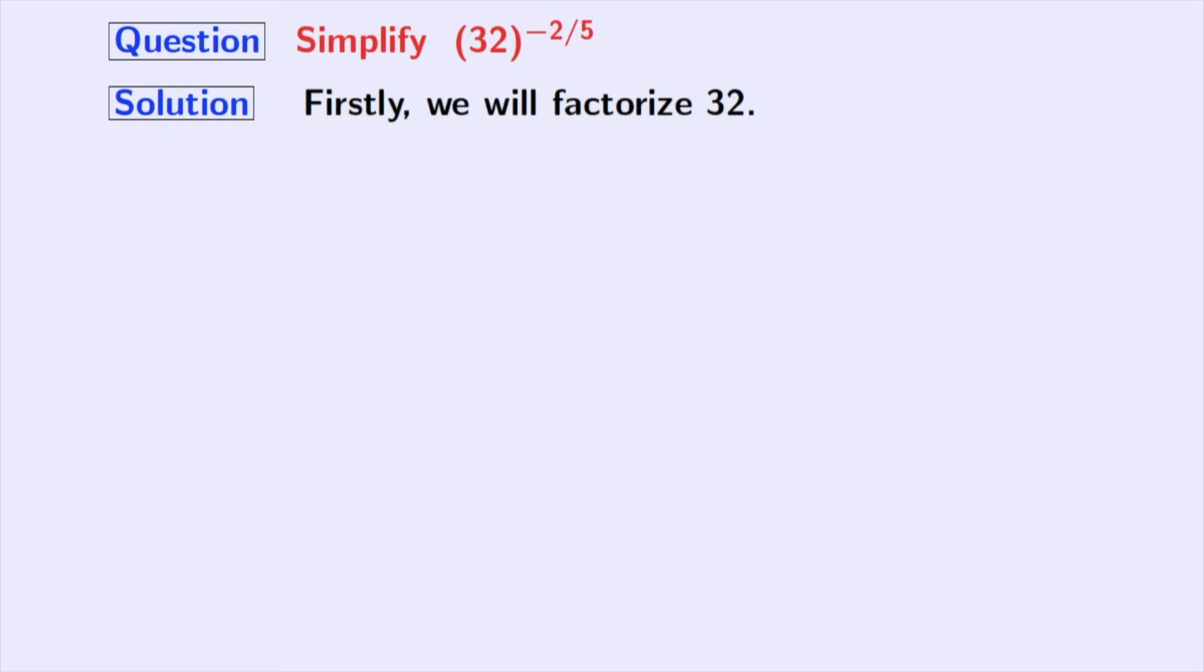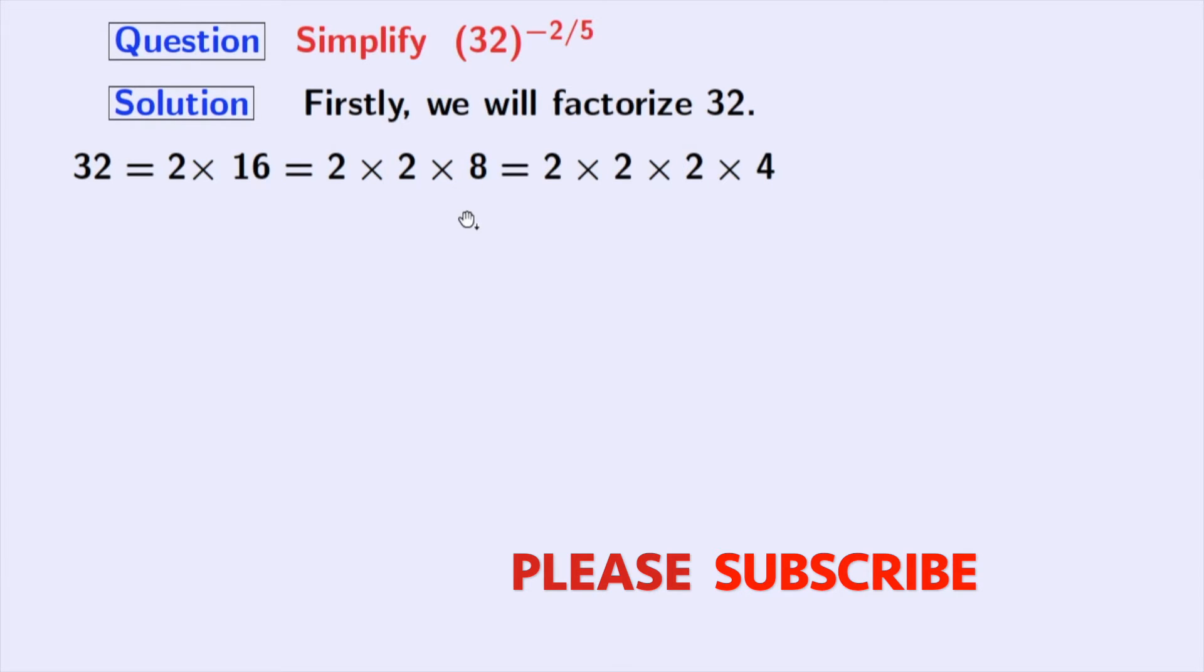Our first task is to factorize 32. As 32 is an even number, it will be divisible by 2. So we have 32 is equal to 2 times 16. In the same way, 16 can be expressed as 2 times 8. Again, 8 is equal to 2 times 4 and 4 is equal to 2 times 2.